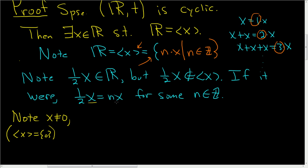So if you divide this by x, and you divide this by x, you get 1 half equals n, and that's a contradiction. It's a contradiction because n is an integer. So therefore, the real numbers under the operation of addition is not cyclic.